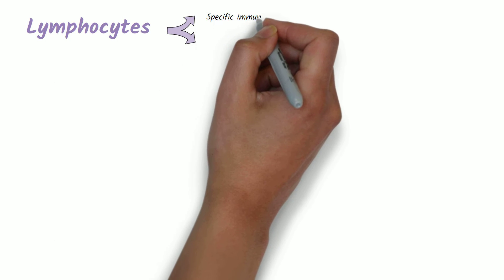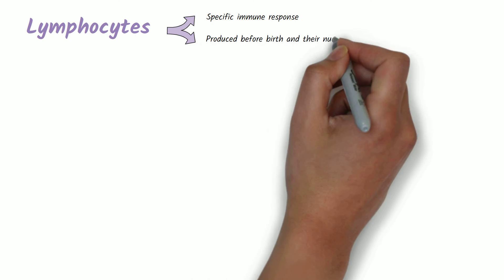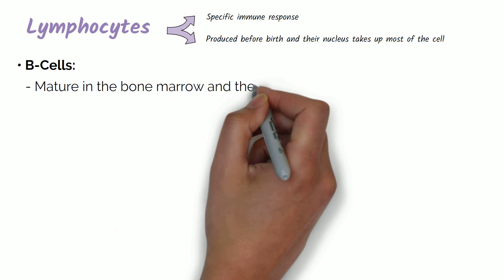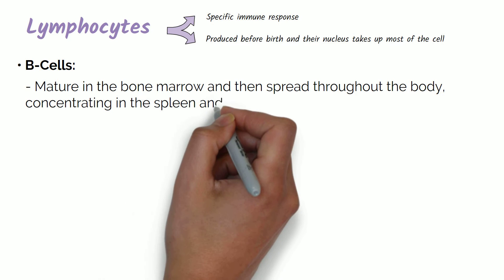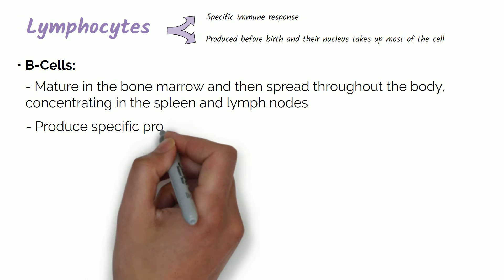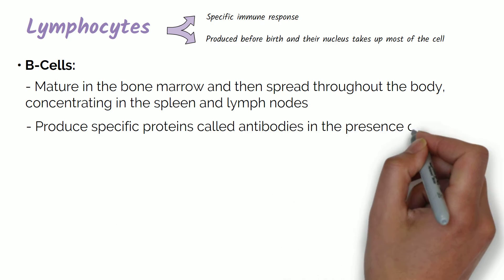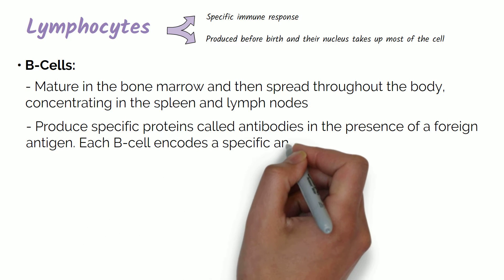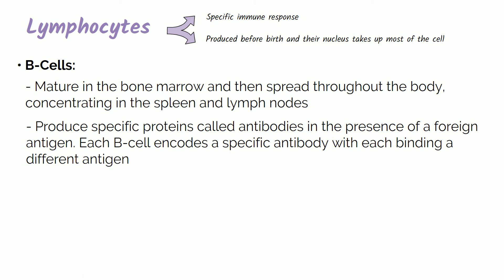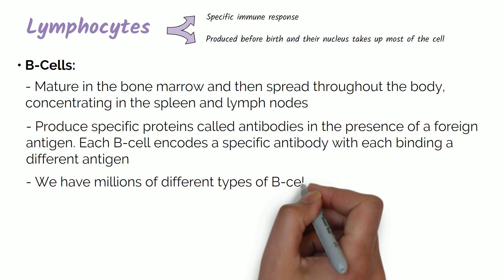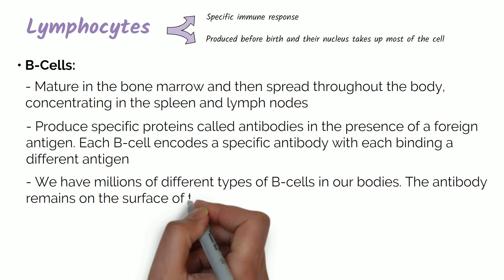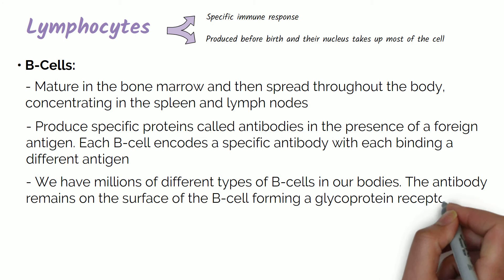Lymphocytes play an important role in the specific immune response. They are produced before birth and contain a nucleus which takes up much of the cell. B lymphocytes or B cells mature in the bone marrow and then spread throughout the body, concentrating in the spleen and lymph nodes. B cells produce specific proteins called antibodies in the presence of a foreign antigen. Each B cell encodes a specific antibody, each binding a different antigen. Therefore, we have millions of different types of B cells in our bodies. The antibody remains on the surface of the B cell, forming a glycoprotein receptor which bonds to one type of antigen.